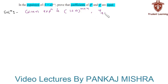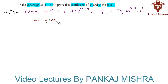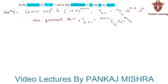We know that the general term of an expansion is given by T(r+1) = nCr · a^(n-r) · b^r. Using this formula, the general term of this expansion is T(r+1) = (m+n)Cr · 1^(m+n-r) · a^r.